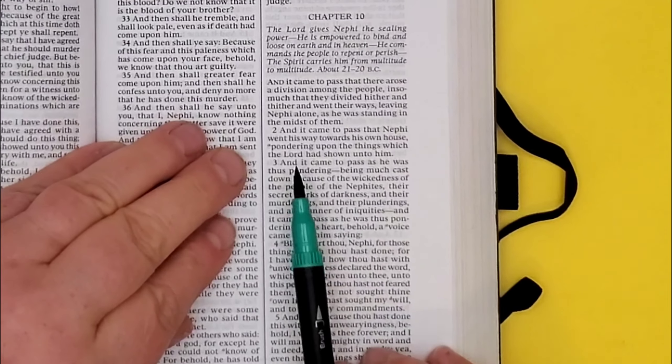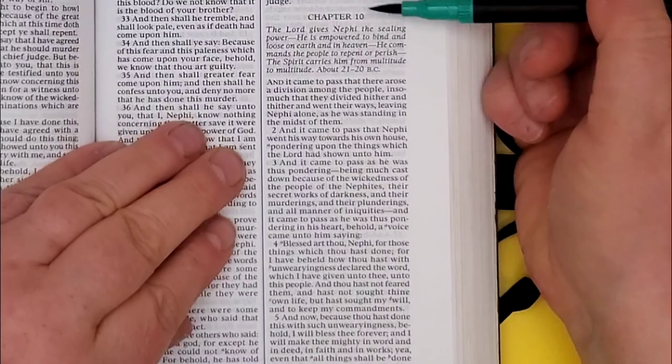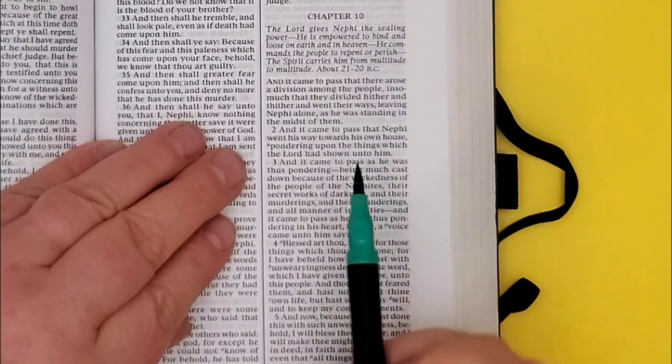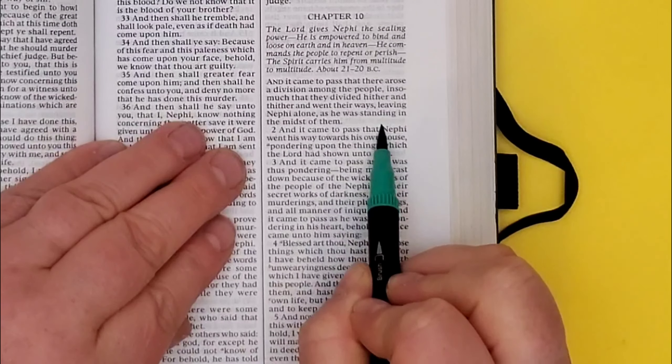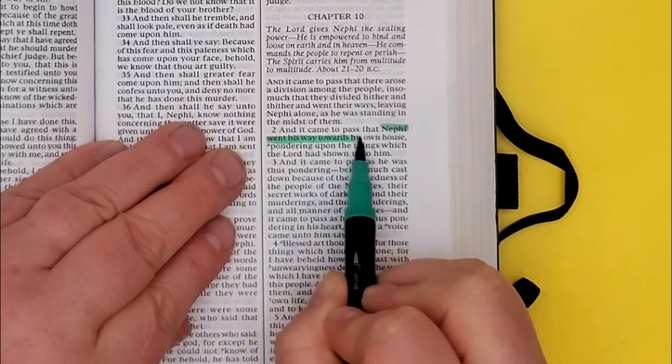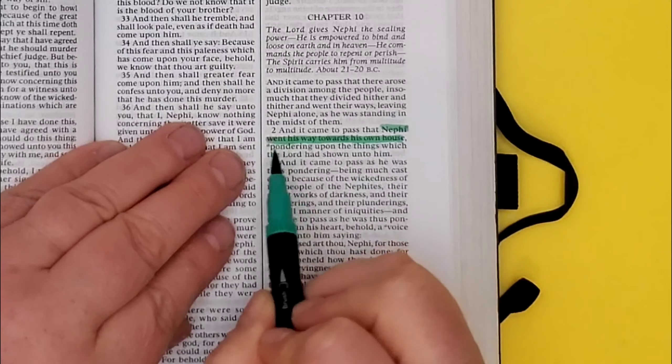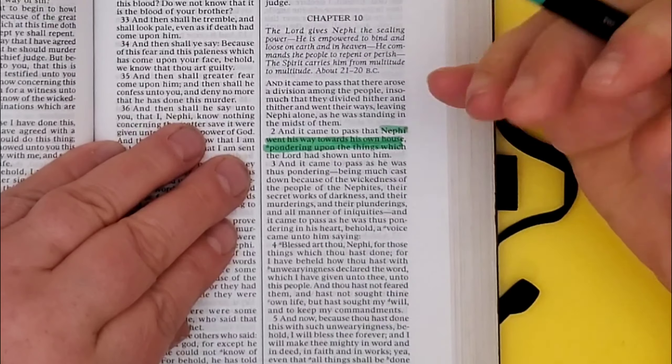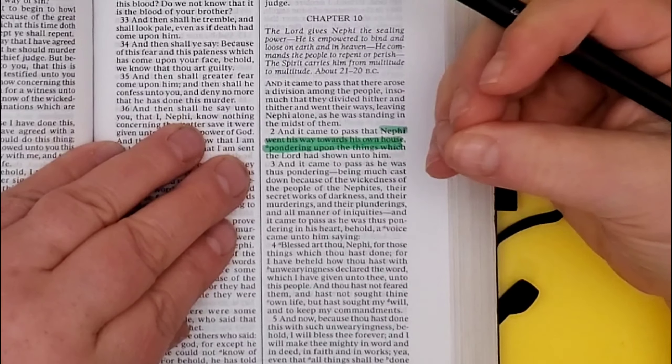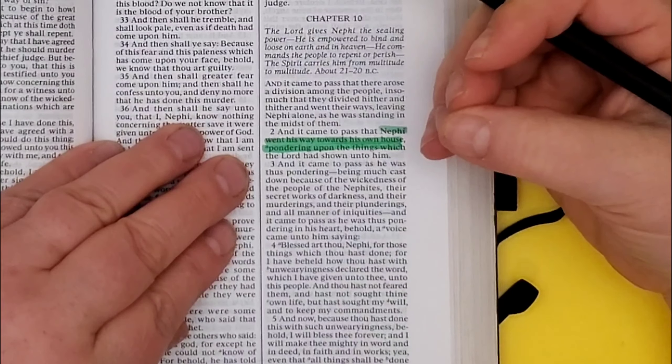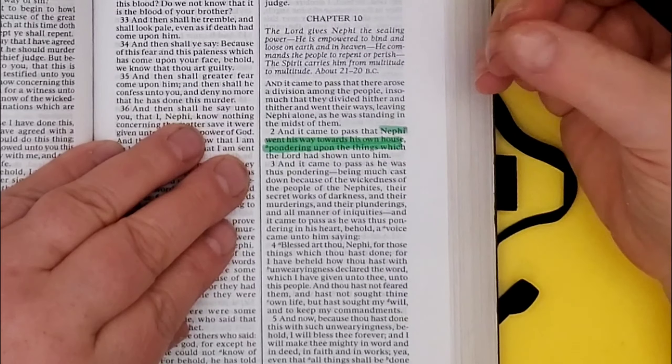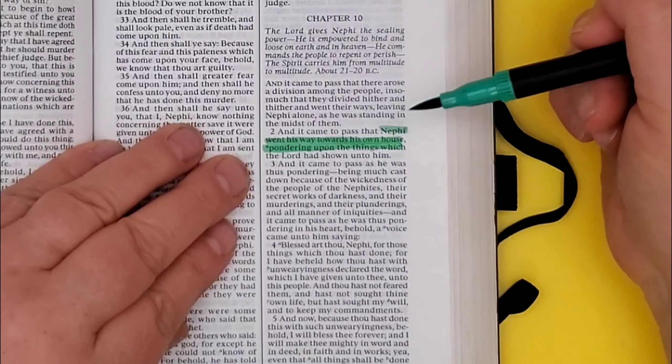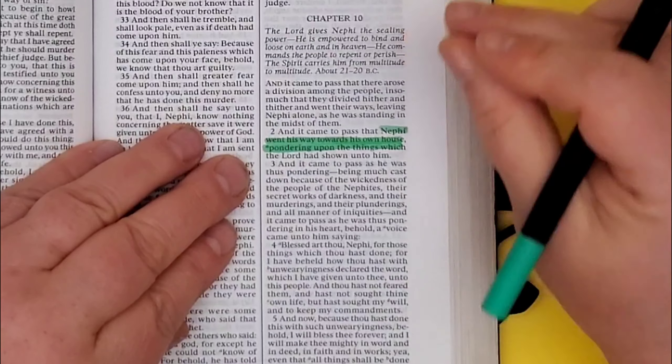Here's a few interesting things that it says in Helaman 10, 2-4. I love that Nephi is walking towards his own house. And as he's walking, he is pondering upon the things which the Lord has shown him. I think that's fantastic. That is my best time to ponder is when I go for a walk with my dog. And if I just don't bring my phone and listen to music, I can really get a lot of pondering.